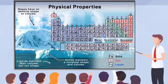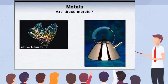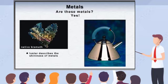Most elements are metals, a few are semi-metals, and a little over a dozen are non-metals. You are probably already familiar with many of the properties of metals. The term metallic luster describes the shininess of metals. Clean metals are often easy to identify by this property alone.